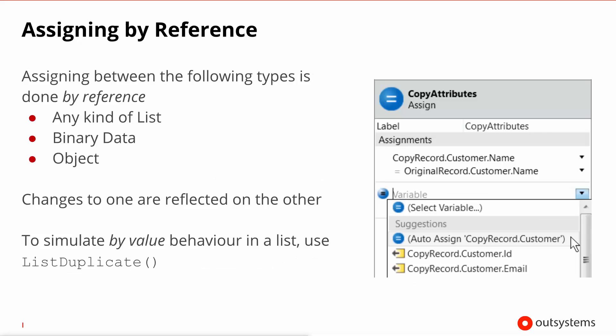It's worth noting that assignments in the OutSystems platform for most data types are done by value. The exceptions are lists, binary data, and objects, which are done by reference, meaning that any changes you make to the source will be visible on the target of an assign at a later point. If you want to simulate by-value behavior on a list and truly duplicate it detached from the original, use the List Duplicate system action.